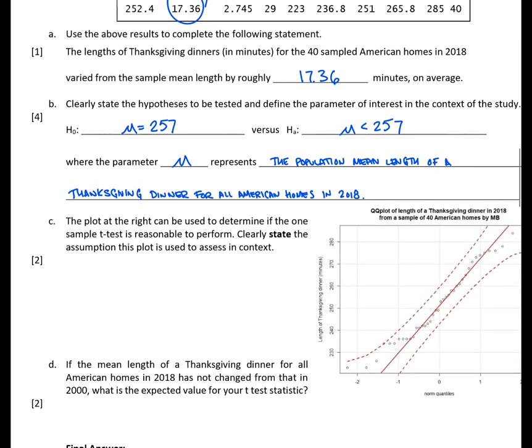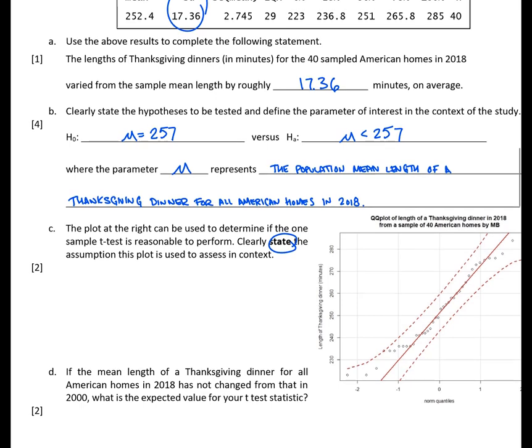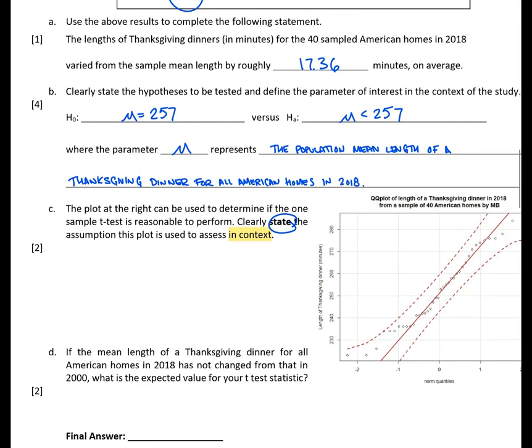The plot at the right can be used to determine if the one sample t-test is reasonable to perform. Clearly state the assumption this plot is used to assess in context. So we see that we have a QQ plot, and we know that QQ plots are used to help check our assumption of normality. Because they're asking for the stated version, we have to state about our population being normally distributed. We also should note here that they're asking specifically to state this assumption in context. So it's not just enough to say that the population is normally distributed. We must say the population of what?